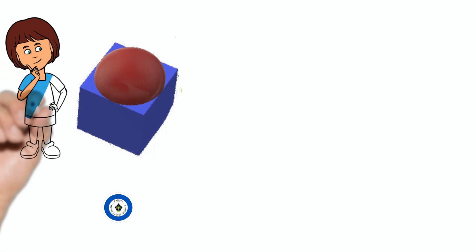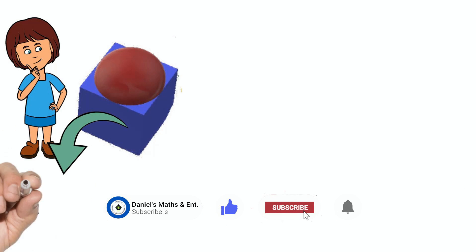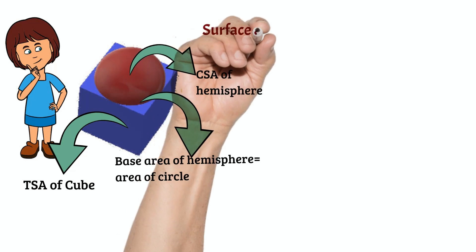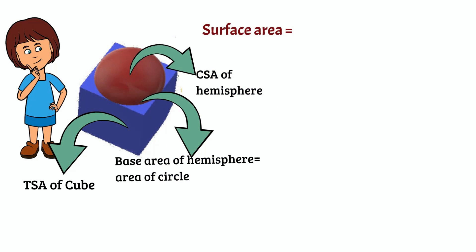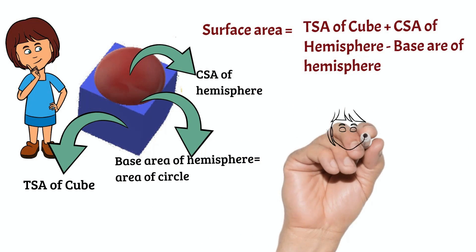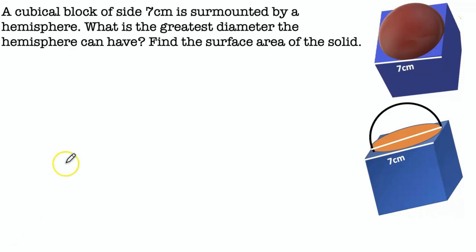It means we have to find total surface area of cube and curved surface area of hemisphere. Base of the hemisphere is circle. Surface area of the solid equals total surface area of cube plus curved surface area of hemisphere minus base area of hemisphere. Here, let us work out this problem.